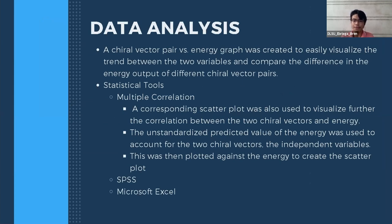For our data analysis, a chiral vector pair versus energy graph was created to visualize the trend between the three variables and compare energy outputs of different chiral vector pairs. We used multiple correlation as our statistical tool. A corresponding scatter plot was also used to visualize the correlation between the two chiral vectors and energy. To account for two independent variables without a 3D graph, we used the unstandardized predicted value of energy, then plotted it against the actual energy. IBM SPSS was used for data analysis and Microsoft Excel for data tabulation.